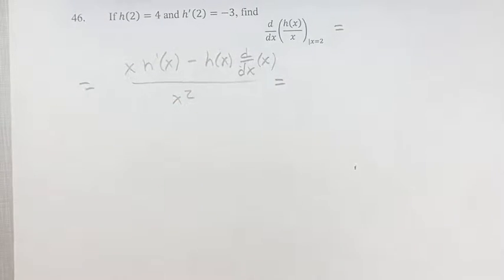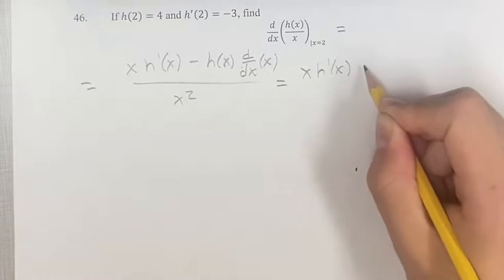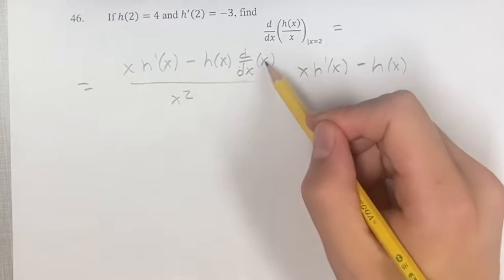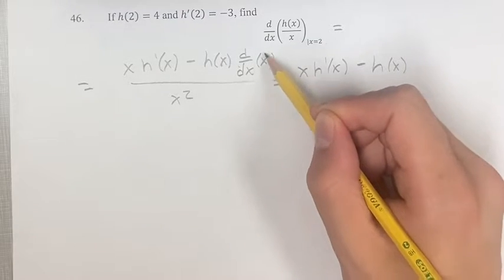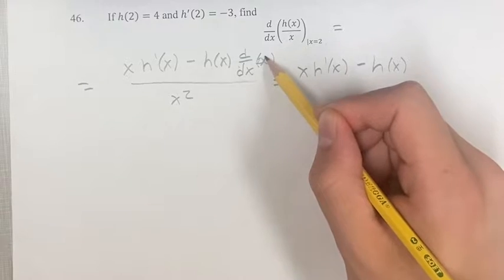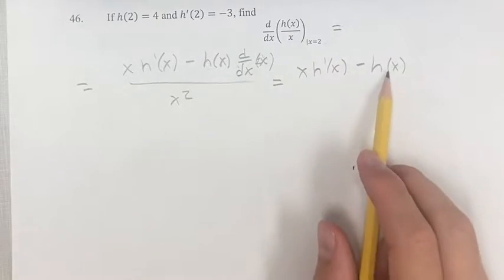This is equal to x h prime of x minus h of x times the derivative of x. This is a linear term, so its derivative is its coefficient, which is just 1, since we just have 1x there. So this is minus h of x times 1, which is just minus h of x.